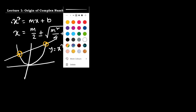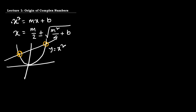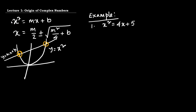So this is our straight line y = mx + b, and the intersection points of y = x² and y = mx + b are the solutions. For a particular choice of m and b, this is the straight line. As an example, let us consider a simple equation, say x² = 4x + 5, meaning m = 4 and b = 5.